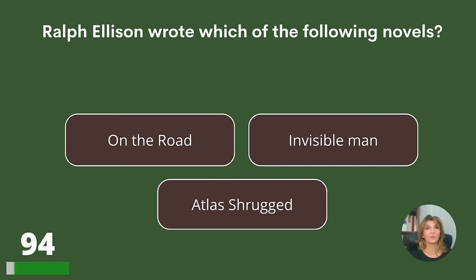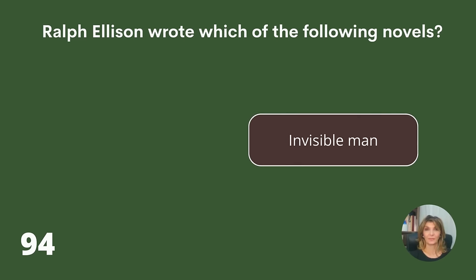Ralph Ellison wrote which of the following novels? On the Road, Invisible Man, or Atlas Shrugged? Answer: Invisible Man.